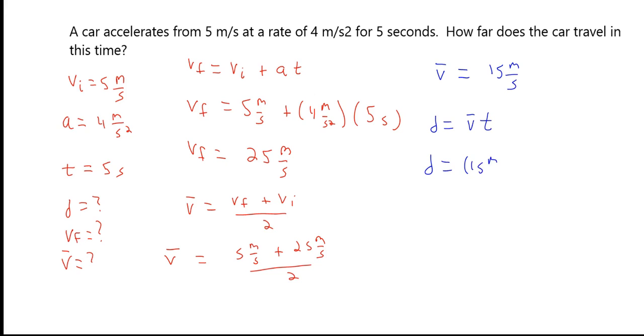15 meters per second times our 5 second time interval. And again, we are going to find that we travel 75 meters in that 5 seconds.